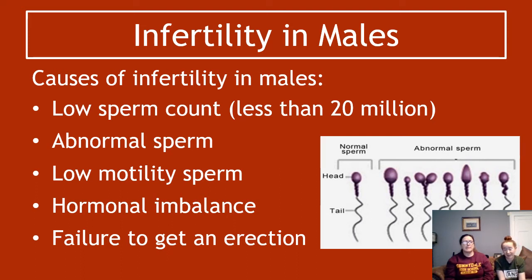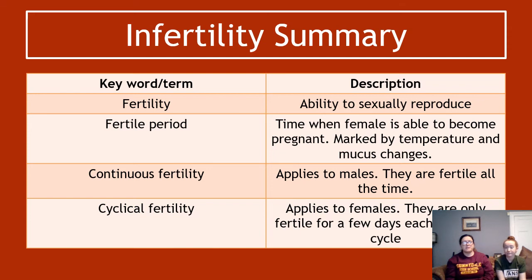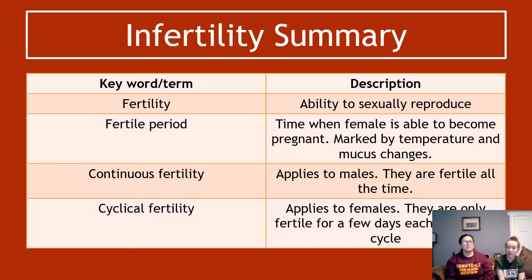Hormonal imbalance is also a major cause for males, as for females — if the hormones aren't right, it's not going to happen. Failure to get an erection means sex cannot occur and so pregnancy cannot happen. To summarize: fertility is the ability to sexually reproduce. The fertile period is the time when a female can become pregnant, marked by a 0.5°C temperature increase and cervical mucus changes.